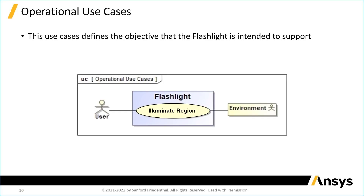In this view we're looking at what's called a use case diagram. The use case itself is this oval right here and it's called 'illuminate region.' You'll recall from the pyramid slide in part one that we often start at the mission level.